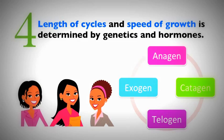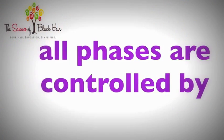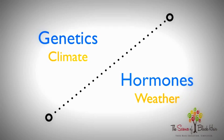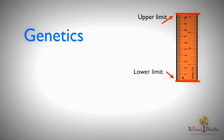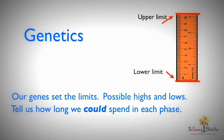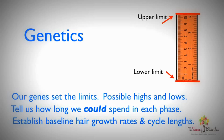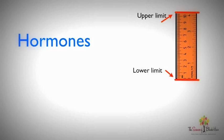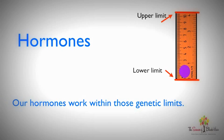Number four: our hair growth cycles and the speed at which our hair grows is controlled by our genes and our hormones. It's helpful to think of genes like the climate and hormones like the weather. The climate sets the tone and the pace for the type of weather that is possible, in the same way that our genes set the pace for what type of growth is possible — setting the limits and giving us possible highs and lows. Our hormones work within those genetic limits and are affected by the environment around us. Our overall health, diet, age, and even the products we use can affect our hormones.